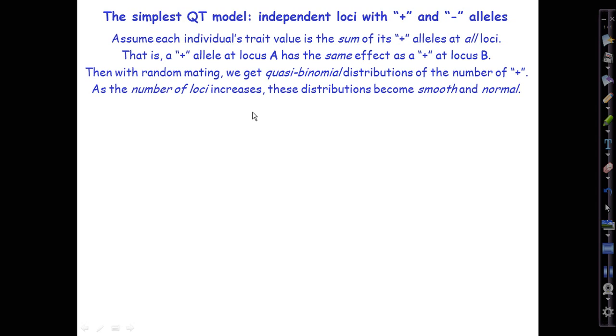That's all there is to it. If there are a lot of loci, each with plus and minus alleles, contributing to the trait value, in the limit of lots of such loci, we're going to get a smooth, close-to-normal type distribution. So let's build this up from the simplest possible case, that of the special case where, in fact, there's only one locus.